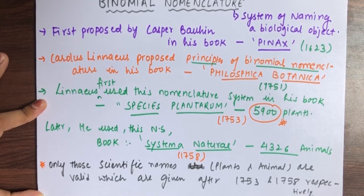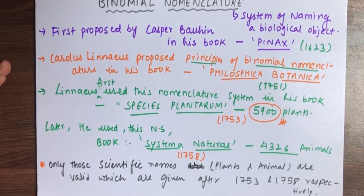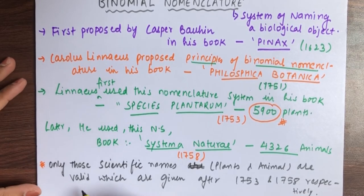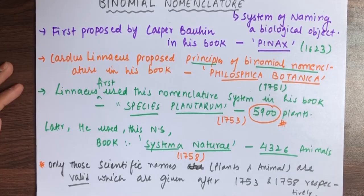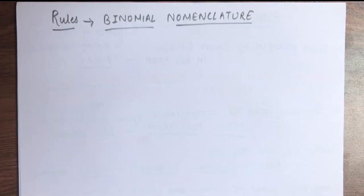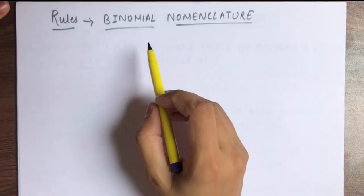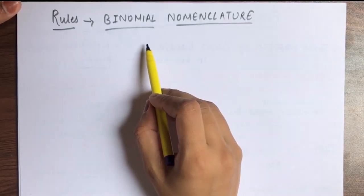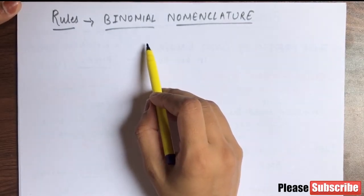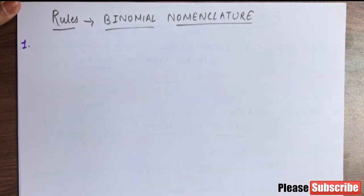So scientific names are valid which came in 1753 for plants and 1758 for animals. Before that, we do not consider scientific names as valid. Now we will discuss what are the important rules of the binomial nomenclature system.